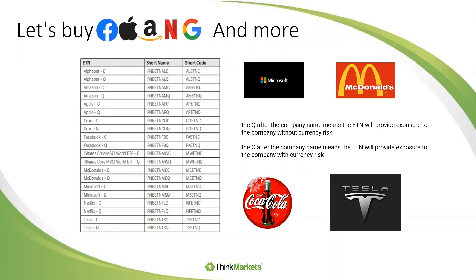They then did something very, very great. For each one of these ETNs, they created two different types. They created the Q — for example, it says Alphabet-C and Alphabet-Q. The Q means that the ETN will provide exposure to the company without currency risk. The C provides exposure to the company with currency risk. That means with Alphabet, which is ultimately Google, you're exposed to the currency risk of the dollar versus the RAND. The other one, the Q, takes away the currency risk. For people who feel that the RAND is going to go up to 20, they would rather buy the C to get the benefit of that currency movement.